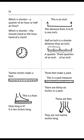Page 58. Which is shorter, a quarter of an hour or half an hour? Which is shorter, the minute hand or the hour hand of a clock? This is an inch. The distance from A to B is one inch. Half an inch is a shorter distance than an inch. A quarter of an inch. Three quarters of an inch.